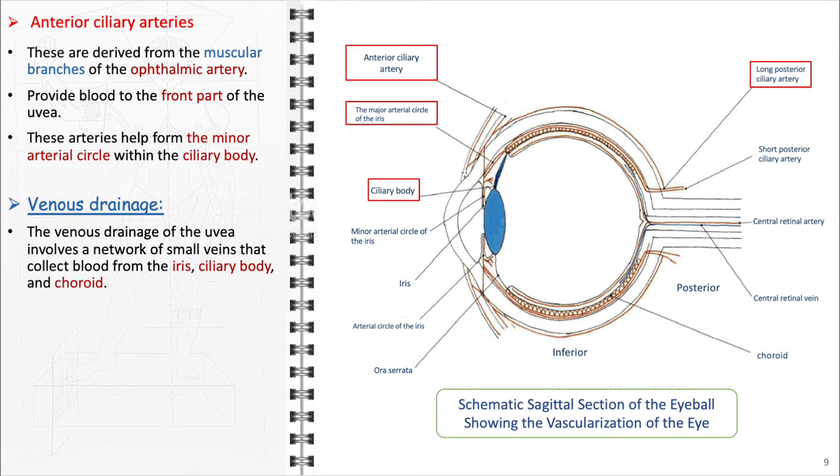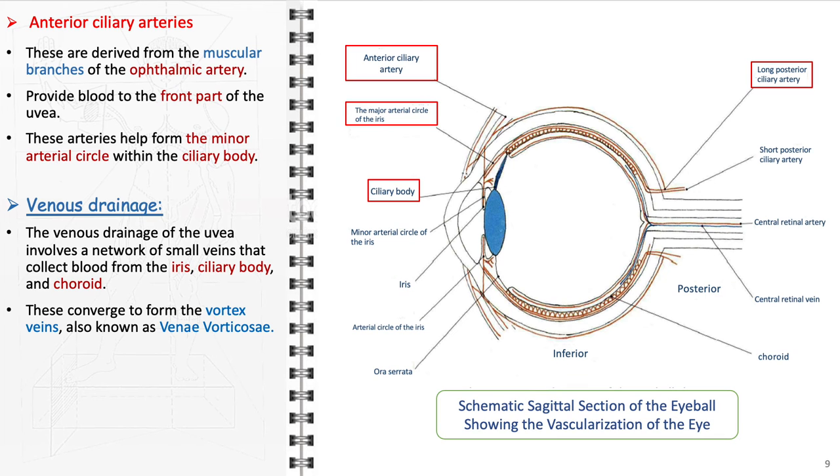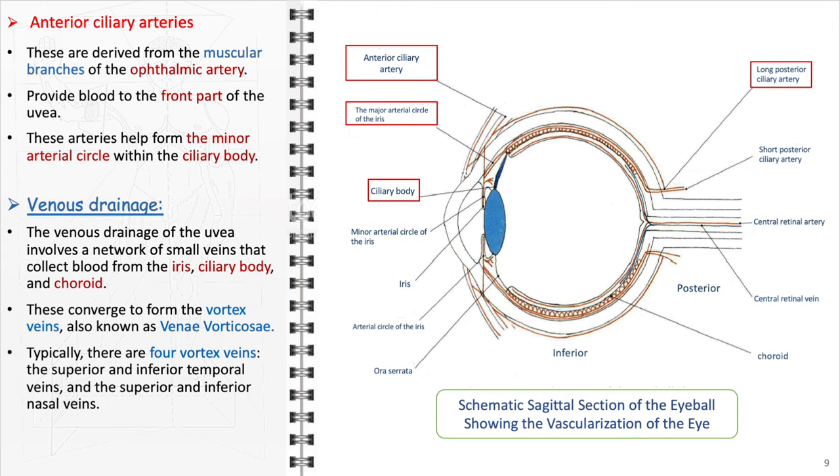The venous drainage of the eye involves a network of small veins that collect blood from the iris, ciliary body, and choroid. These converge to form the vortex veins, also known as venae vorticosae. Typically, there are four vortex veins: the superior and inferior temporal veins, and the superior and inferior nasal veins. These then drain into the larger superior and inferior ophthalmic veins.